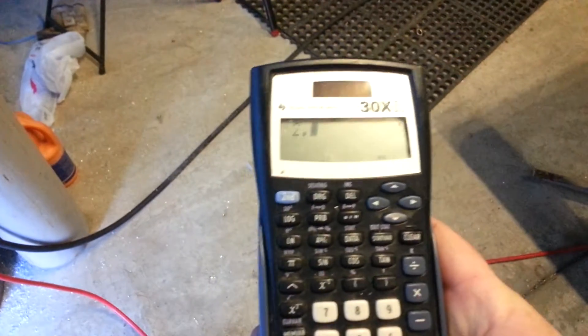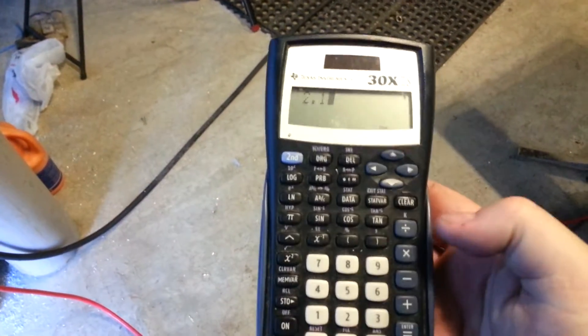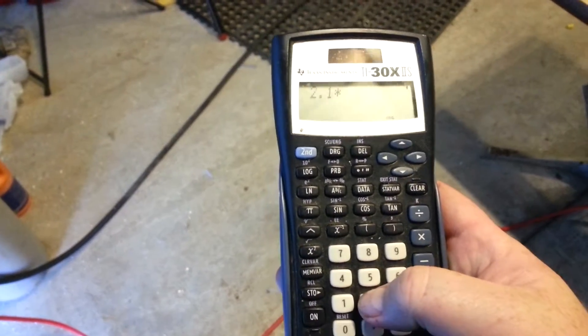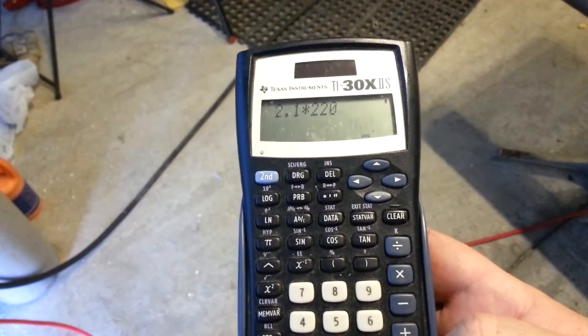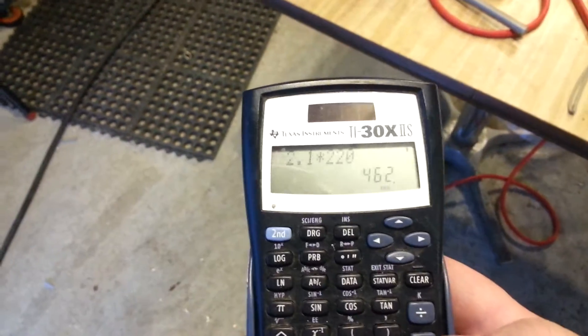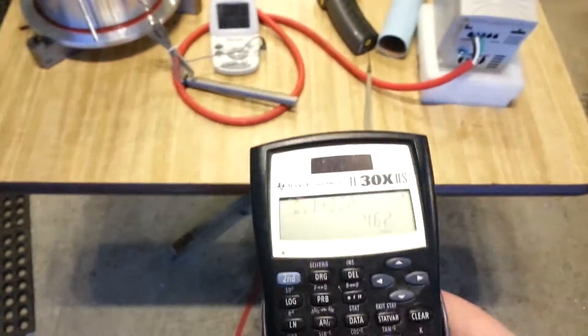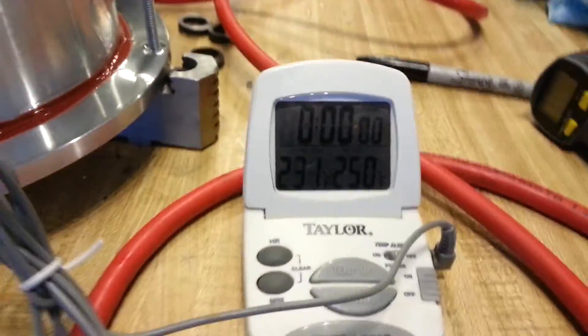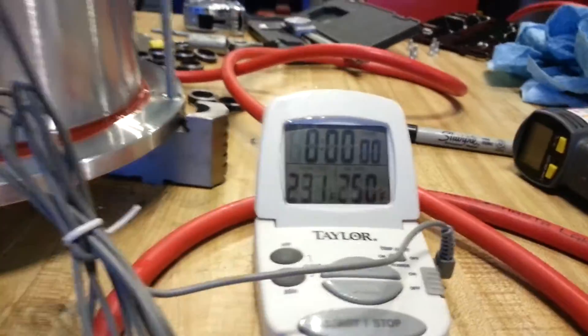So 2.1 times 220 volts - I got it wired in at 220. Our power consumption right now is right around 462 watts on the high side, and we are producing 231 degrees. Pretty solid.